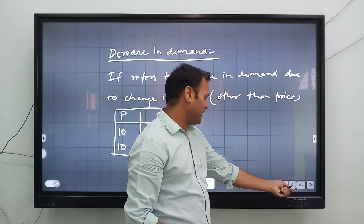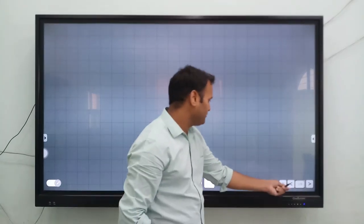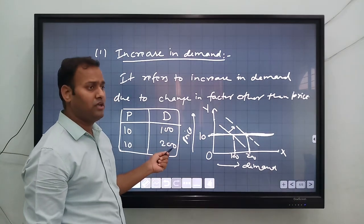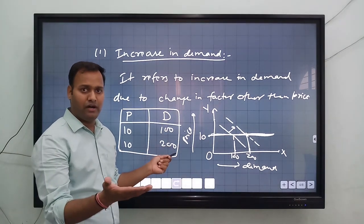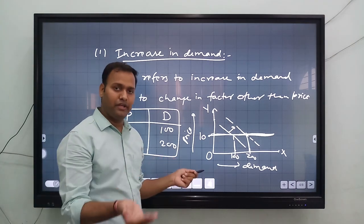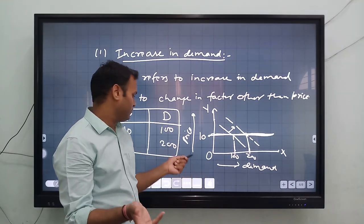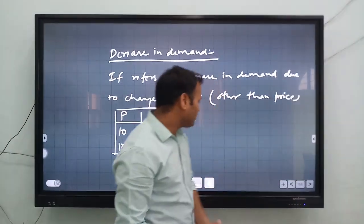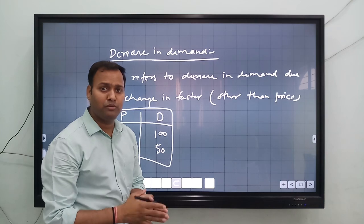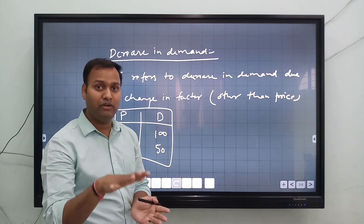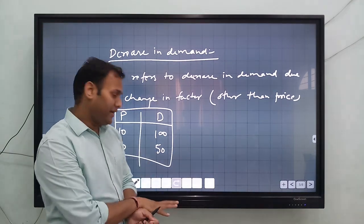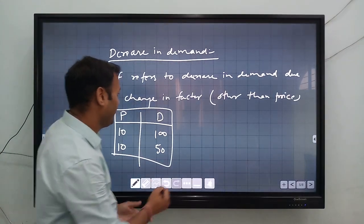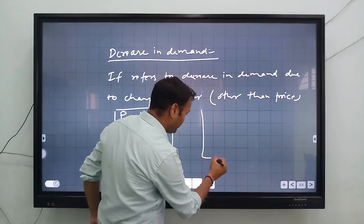In the previous example, demand increases from 100 to 200 because of a favorable change in taste and preference or an increase in income. There are many parameters where demand increases but the price of the commodity is fixed. Now, how will demand decrease? Maybe the income of the particular consumer will decrease. Then demand for that commodity will also decrease. This is the concept of decrease in demand.